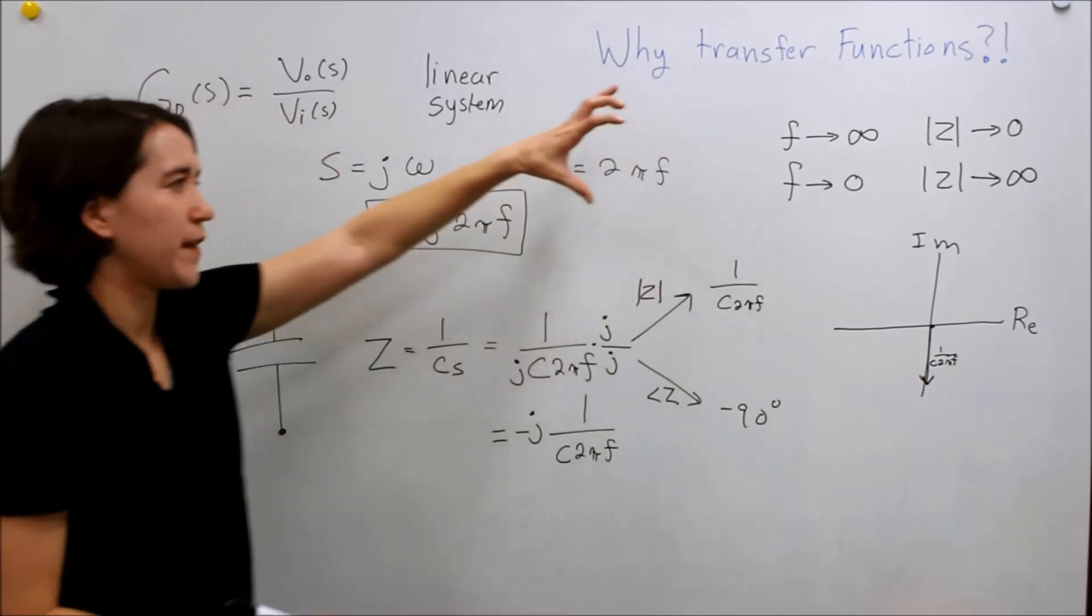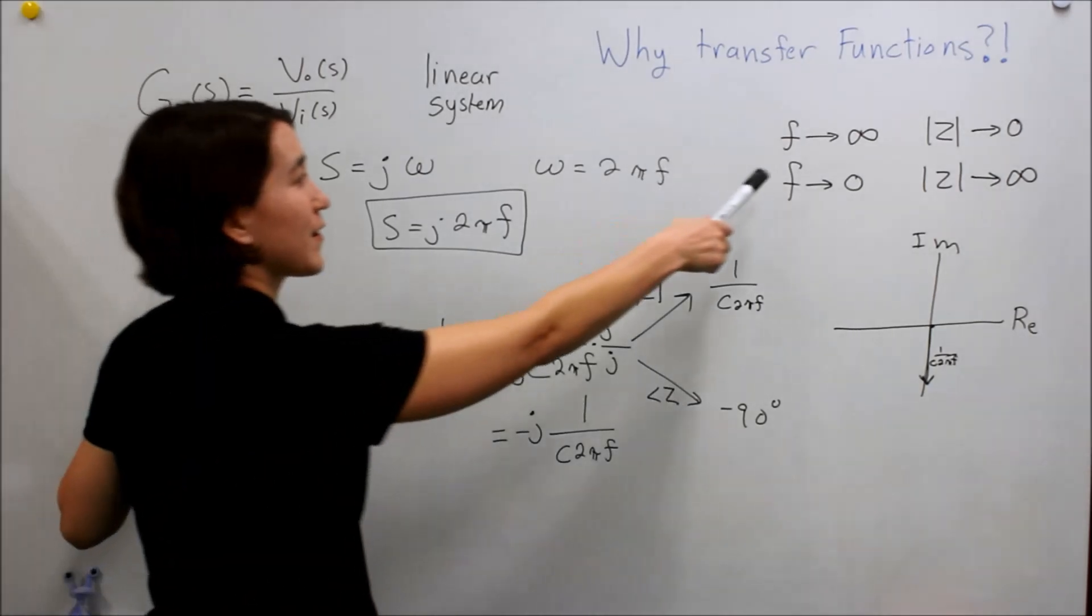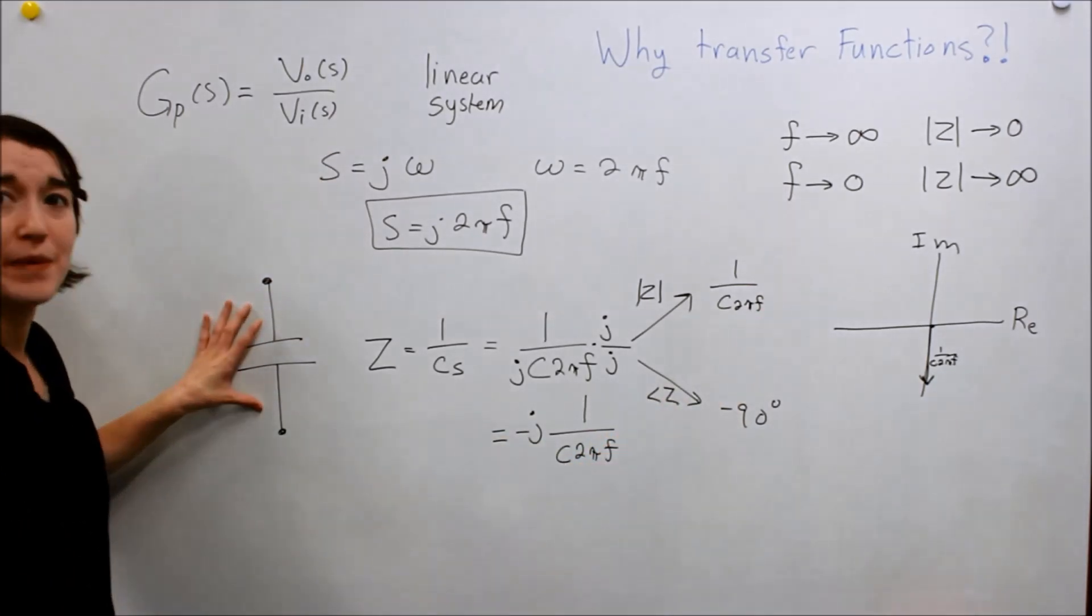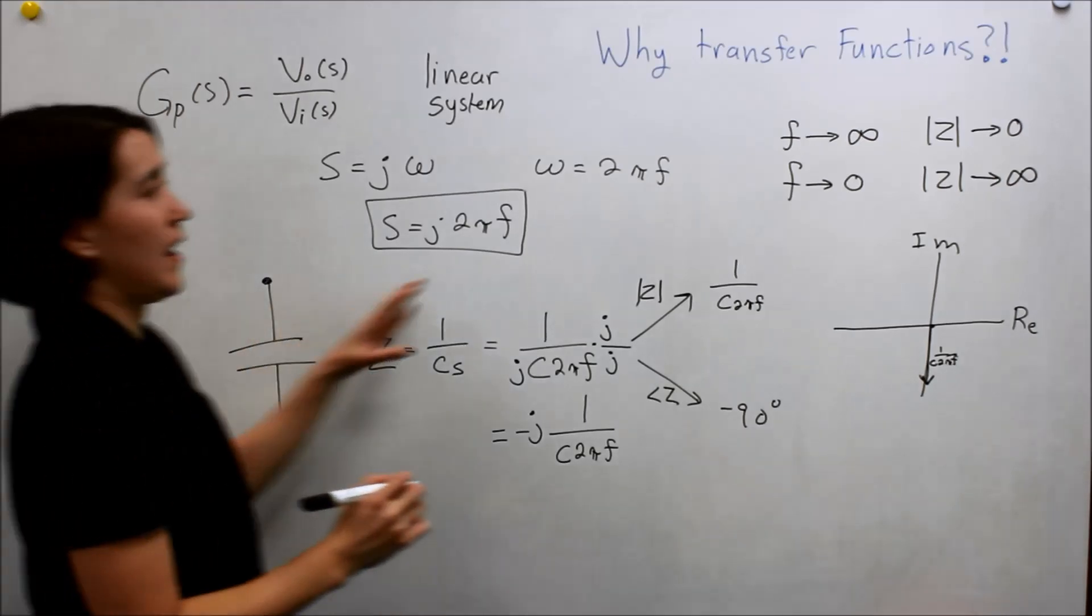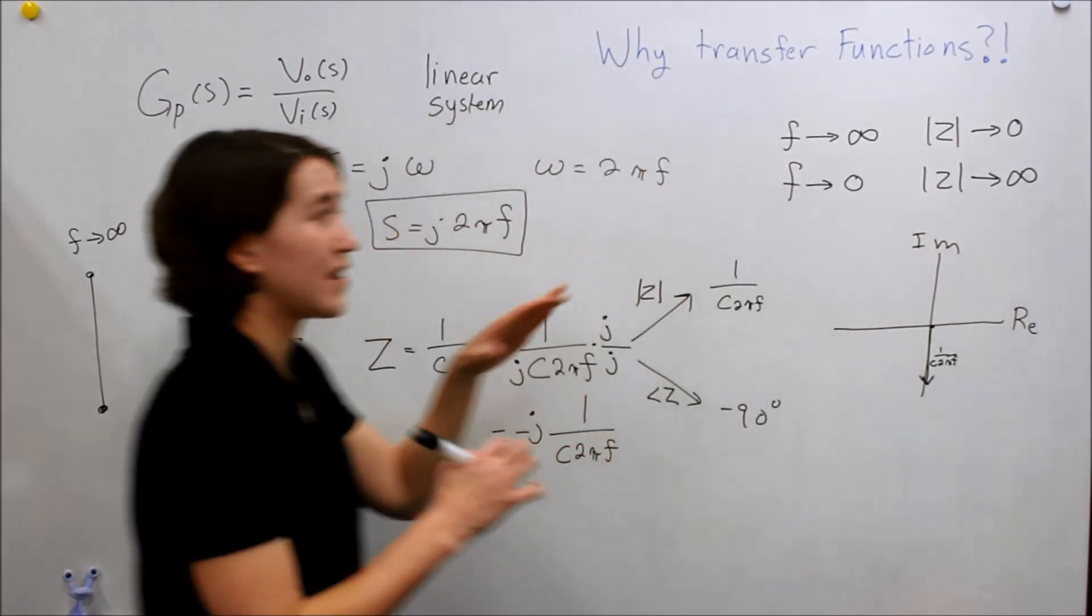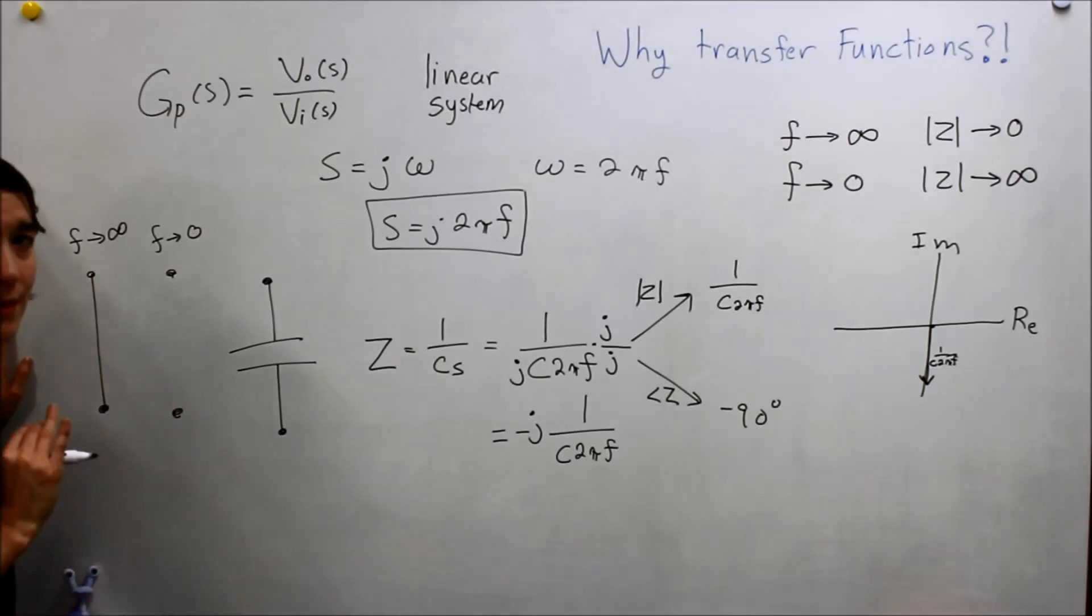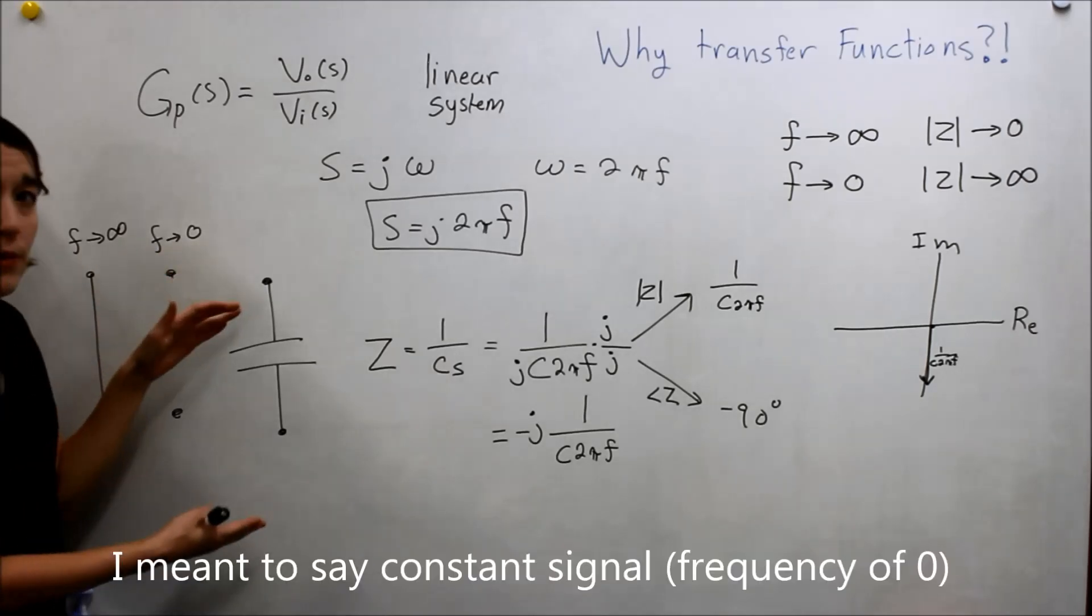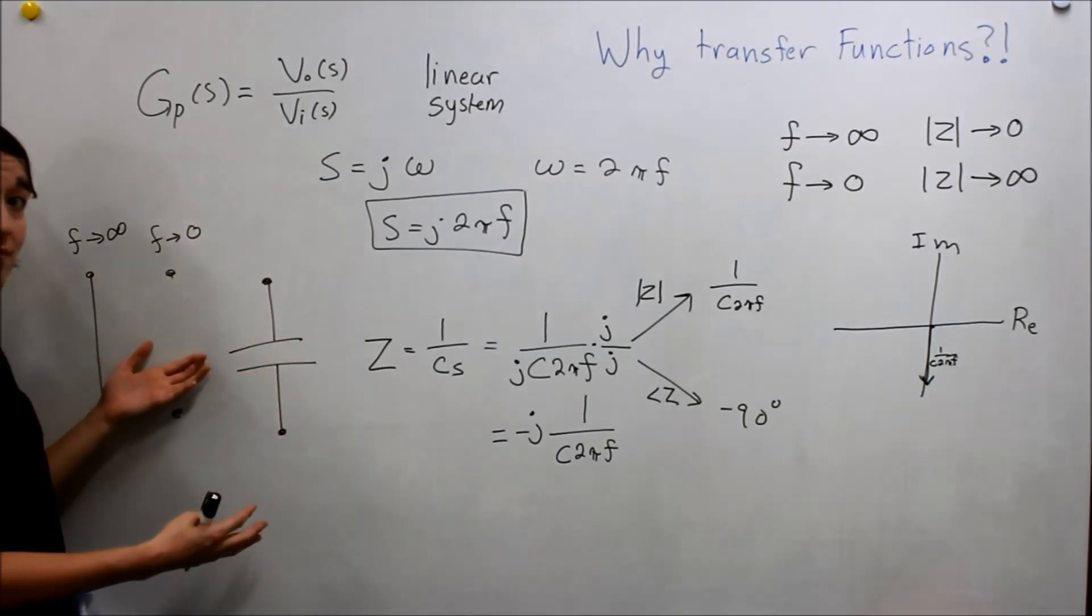And if we do the opposite, if we take f going towards zero, which is DC, no changes in the signal, just DC, then we see that this goes to infinity. So the magnitude of Z goes to infinity. This is all the math part. If we think back to this capacitor itself, what this means is that at very high frequencies towards infinite, our impedance is zero, and impedance of zero here is effectively a short.